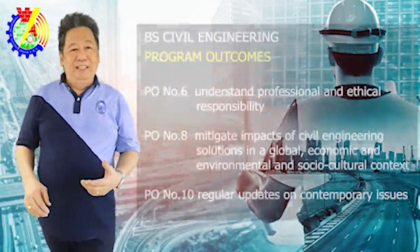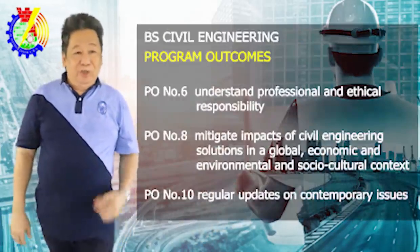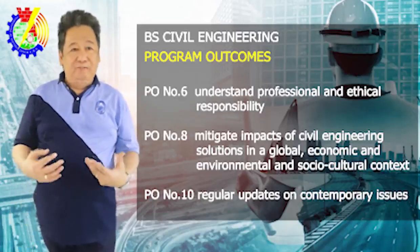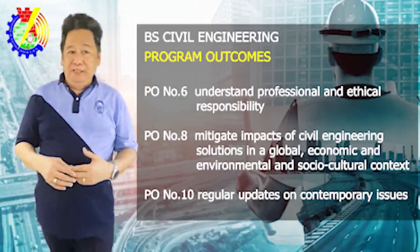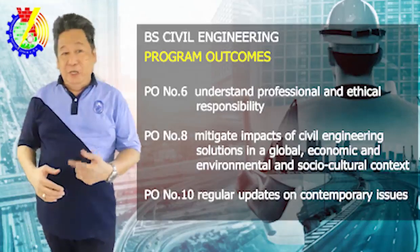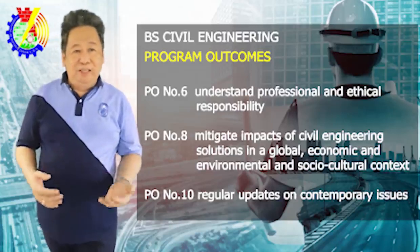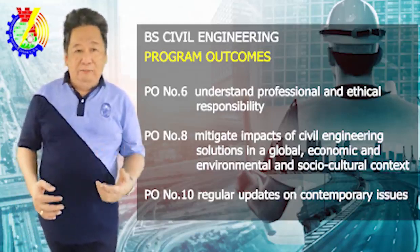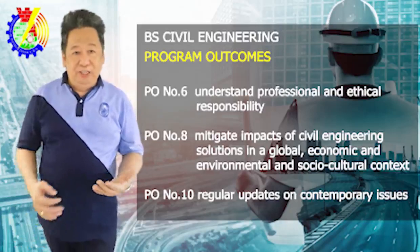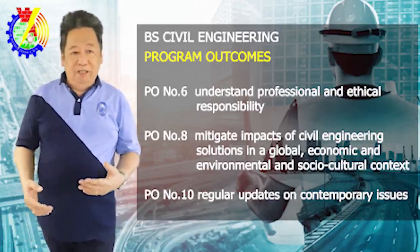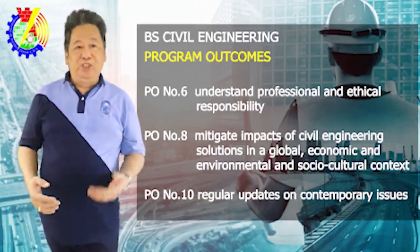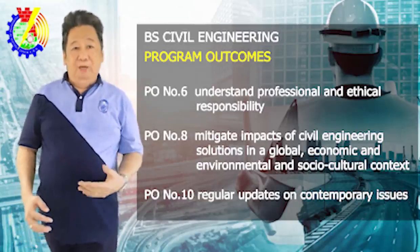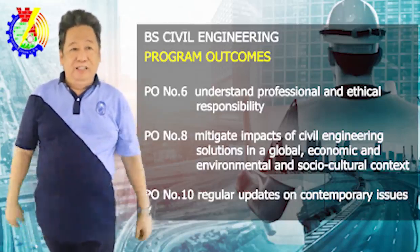Now open your learning guide to the program outcomes. In this course, we shall address particularly three of the 13 outcomes of the BS Civil Engineering program: number 6, 8, and 10. Number 6 is that you understand the professional and ethical responsibility. Program outcome number 8 is that you are capable of mitigating impacts of civil engineering solutions in a global, economic, environmental, and sociocultural context. Program outcome number 10 is that you are capable of getting updated on contemporary issues.